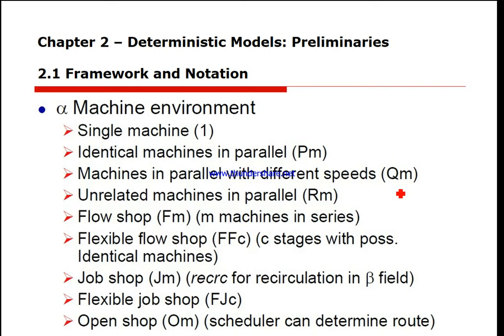If the speeds of the machines are independent of the job, then the environment is identical to the uniform parallel case. We could also have a flow shop — machines in series — using what's known as first-in-first-out, also called permutation (Prm). Or we could have a flexible flow shop, which is a generalization of the flow shop and the parallel machine environment.